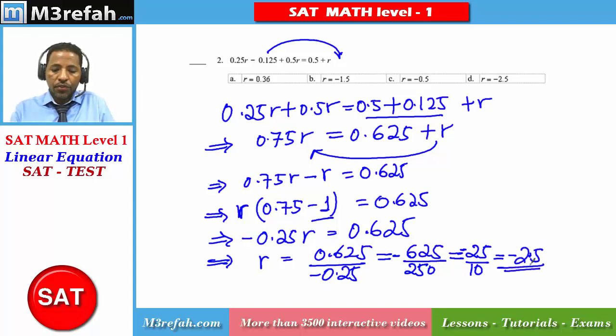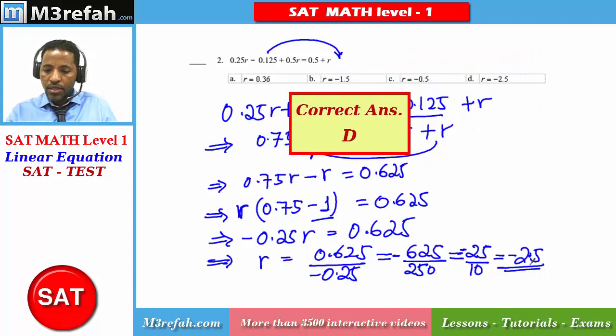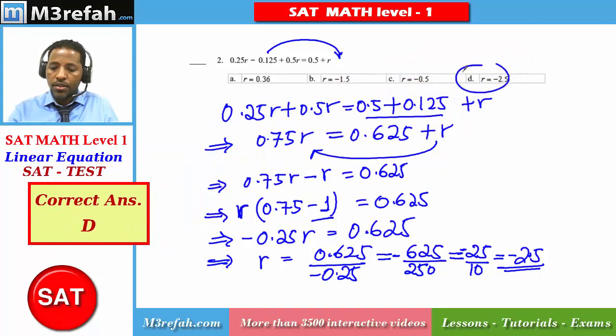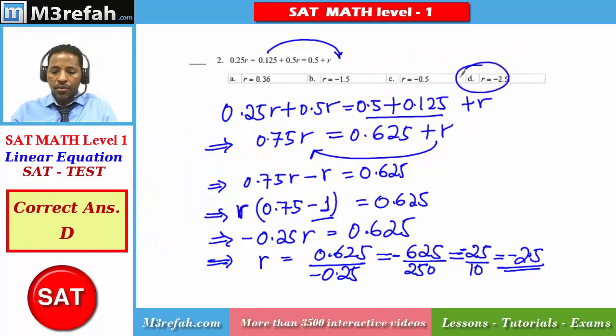So which of these four multiple choices is the correct answer for your equation? It is d, r is equal to negative 2.5.